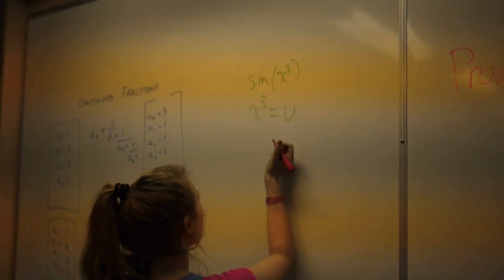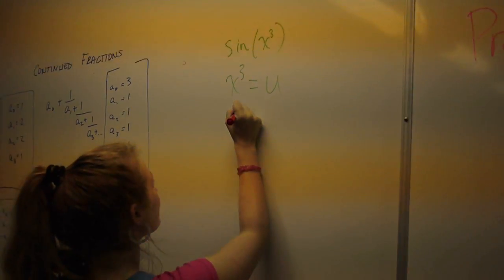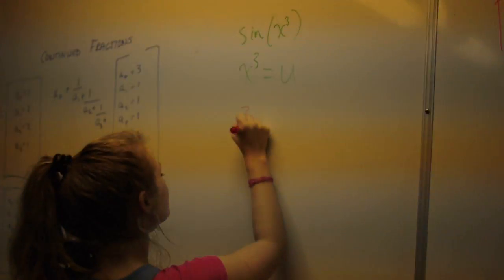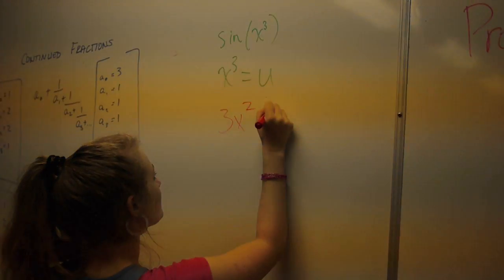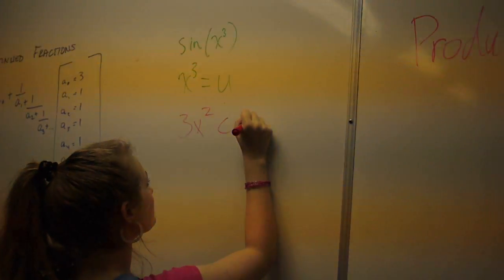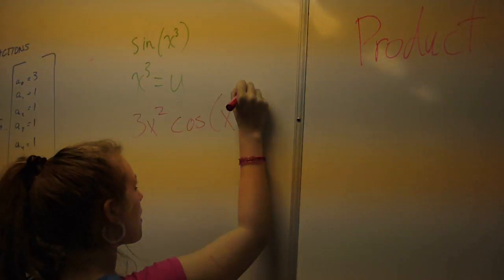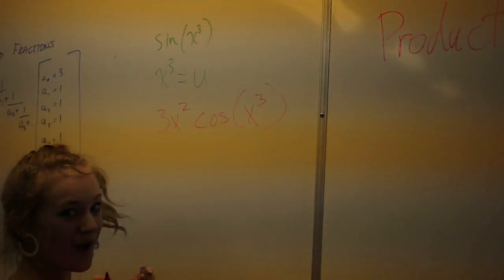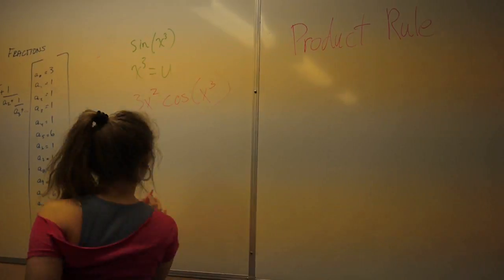Hey fool, chain rule. This gonna make you drool. What you do, this is cool, is derive the inside. Substitute X for you. What else is there to do?